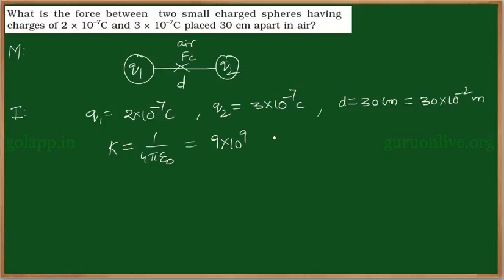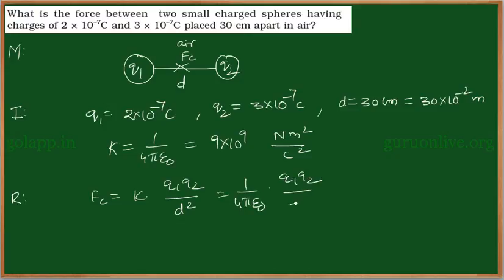Now come to the resolving part. Coulomb force Fc can be written as k times q₁q₂ by d square, or 1 by 4π ε₀ times q₁q₂ by d square.